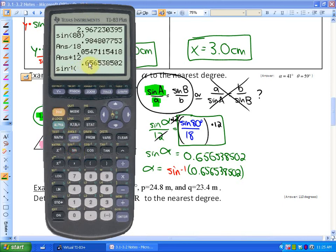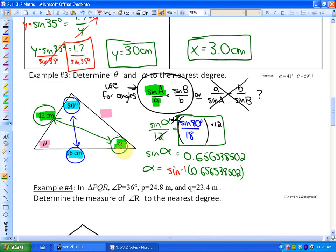And if I would like to enter in this number and have my calculator do it for me, I could enter in my previous answer. So I'm going to press second and the negative sign on my calculator. So I'm taking the sine inverse of 0.656538502. Hit enter. And it looks like the angle is 41 degrees, which looks reasonable. So 41 degrees. So that's angle alpha.